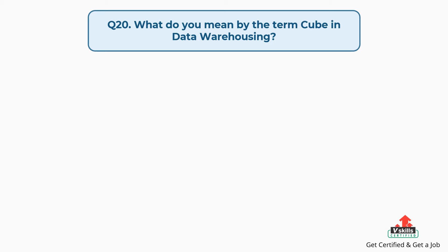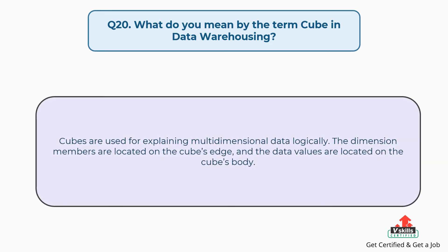Question number twenty: What do you mean by the term cube in data warehousing? Cubes are used for explaining multidimensional data logically. The dimension members are located on the cube's edge, and the data values are located on the cube's body.